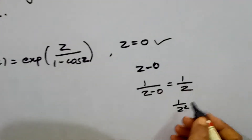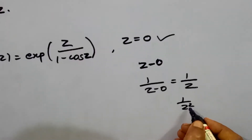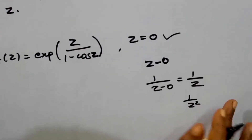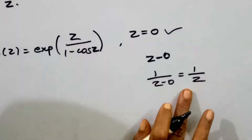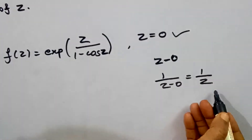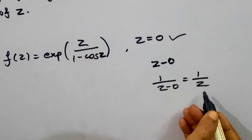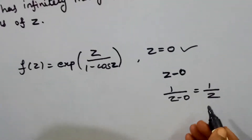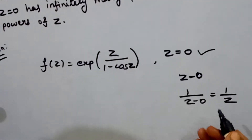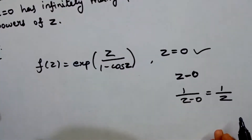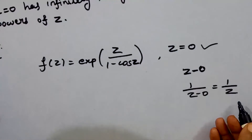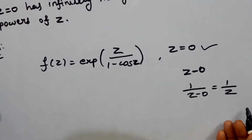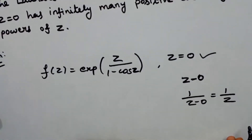Similarly, 1 over z cubed means a pole of order 3. If the negative powers have an infinite number of terms, then the singular point is an essential singularity. So we summarize: the types of singular points are pole, removable singularity, and essential singularity.